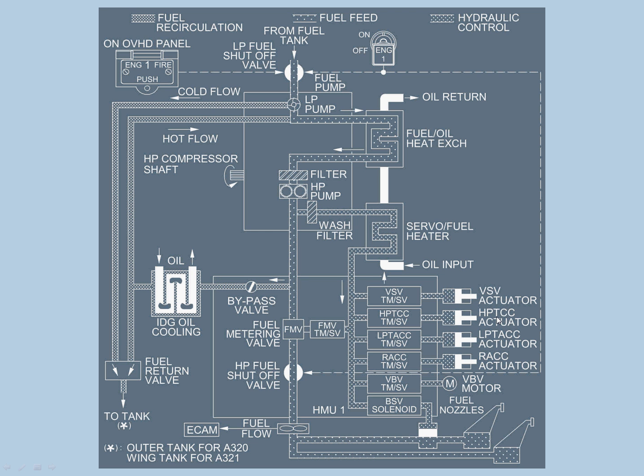HPTCC gives clearance to the turbine by cooling the high pressure turbine case, which optimizes turbine performance and reduces exhaust gas temperature. LPTACC controls the low pressure turbine clearance by modulating fan bleed air flow for cooling the low pressure turbine case. These clearance controls keep the turbine from scrubbing the cowling, as turbines expand due to the heat the engine generates.